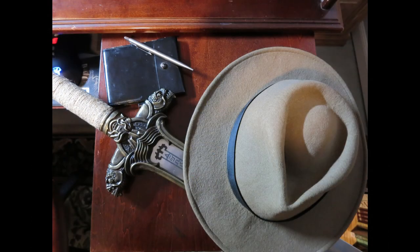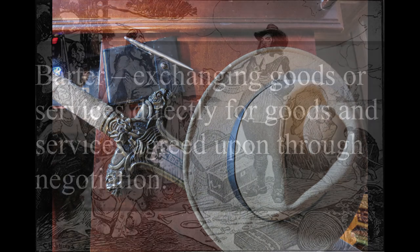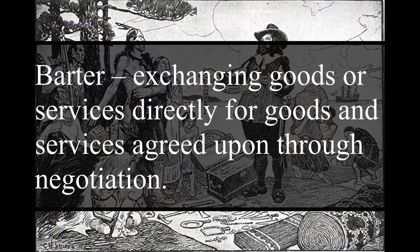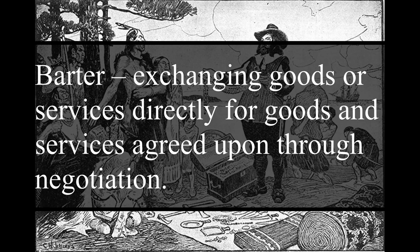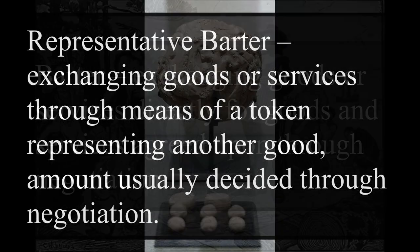The five systems determining the tools to facilitate exchange are: first, barter — exchanging goods or services directly for goods and services agreed upon through negotiation. Second, representative barter —